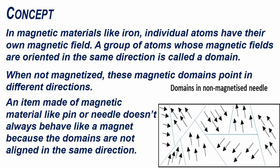In magnetic materials like iron, individual atoms have their own magnetic field. A group of atoms whose magnetic fields are oriented in the same direction is called a domain. When not magnetized, these magnetic domains point in different directions.